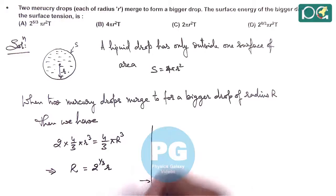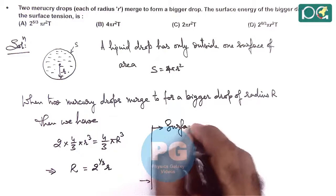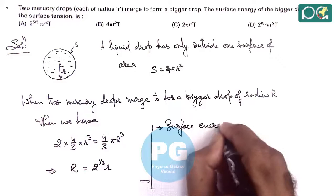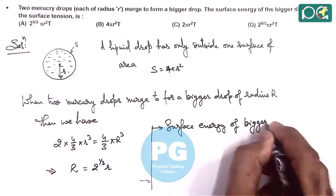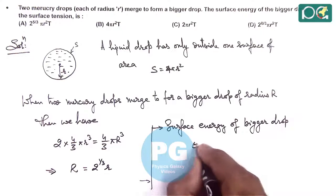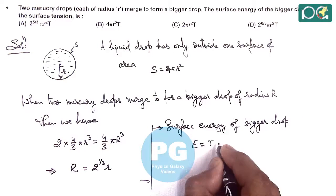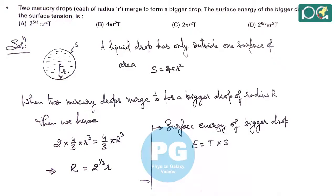Here if we calculate the surface energy of a bigger drop, then surface energy of bigger drop we can write as surface tension multiplied by the surface area.